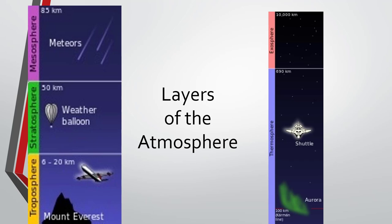So let's talk about the layers of the atmosphere. The atmosphere actually goes up to 10,000 kilometers — that's where we end it with the exosphere. But most of the important processes of the atmosphere take place in the lowest two layers, the troposphere and stratosphere.